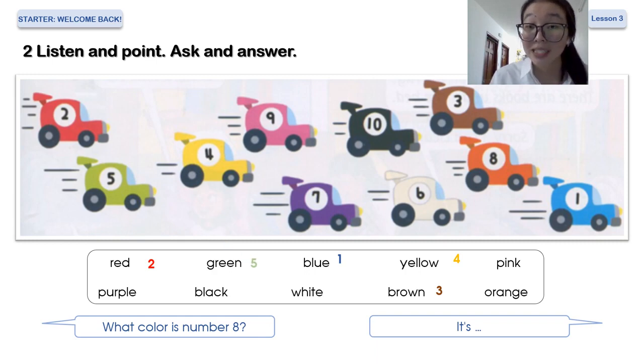And how about number 6? Oh, we can see the color clearly. Maybe it's white. Yes, that's right, it's white. And what color is number 7? It's purple.